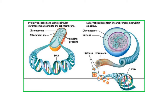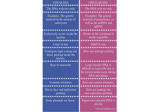Prokaryotic cells have circular chromosomes and eukaryotic cells have linear DNA. Linear DNA has two ends, whereas circular DNA has no ends. Examples include the genetic material in the nucleus of eukaryotes and the genetic material of prokaryotes, as well as mitochondrial DNA and chloroplast DNA, also known as CP DNA.